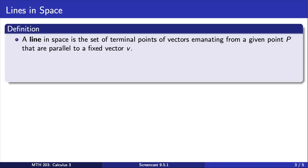This idea leads to a new definition of a line. A line in space is the set of terminal points of vectors emanating from some given point P that are parallel to a fixed vector V.